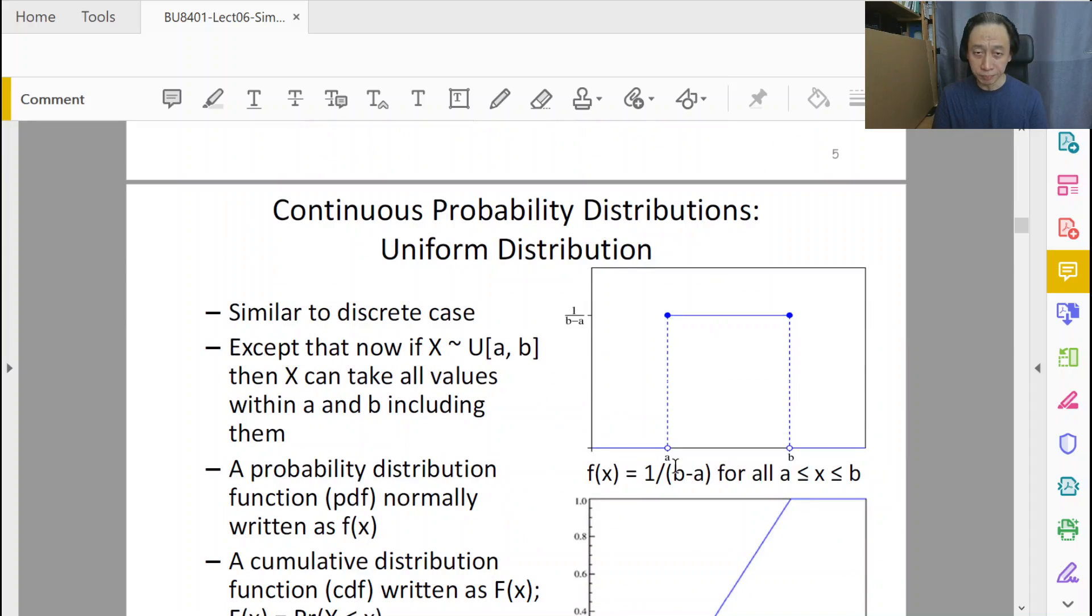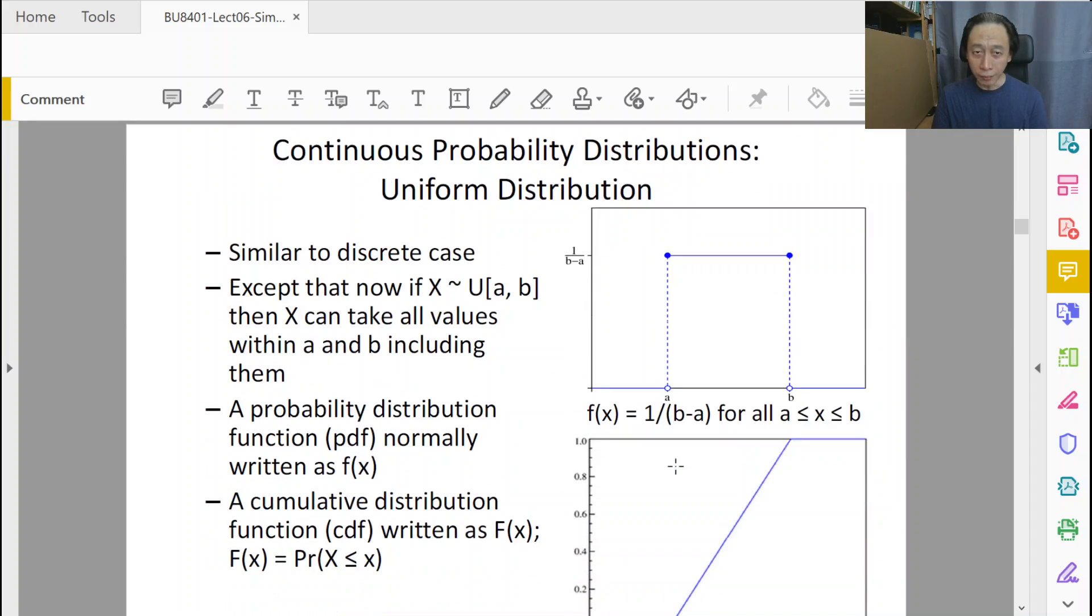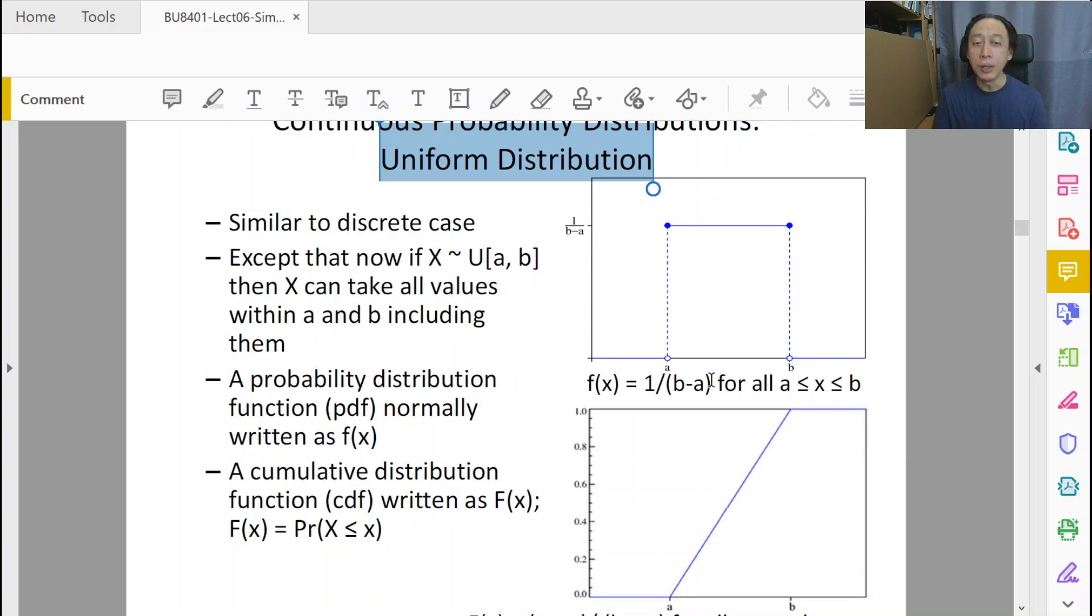In this example we have the very simple basic probability distribution function called the uniform distribution function. Uniform means that all numbers are equally probable. In this particular situation we take it as an example to understand what is cumulative distribution function, something I promise is very key to simulation.